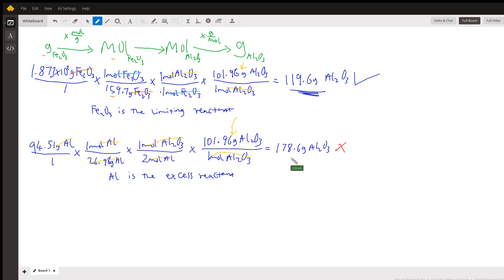However, aluminum produced a greater amount of the product, hence aluminum is the excess reactant. But our final answer should be the least amount of the product produced. That is why this is the correct answer.